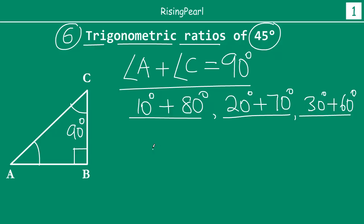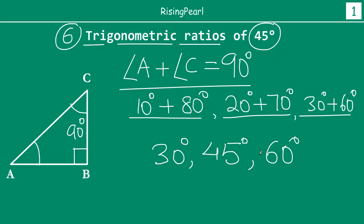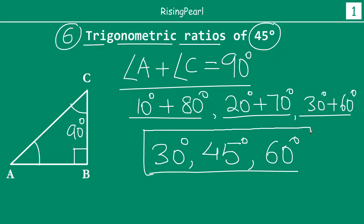And from webisode 3 onwards we have learned that whenever we express a trigonometric ratio, the question is trigonometric ratio of what? Trigonometric ratio of an angle. Now since in a right triangle the angles can have infinite combinations, we cannot really focus on trigonometric ratios for all angles. So what we are going to do is focus on angles 30 degrees, 45 degrees, and 60 degrees as our standard angles. And then 0 degrees and 90 degrees will be two special cases. In today's webisode the focus is on learning trigonometric ratios for the 45 degree angle.